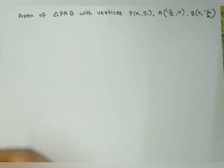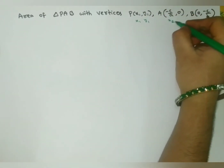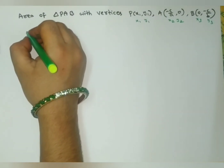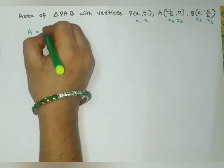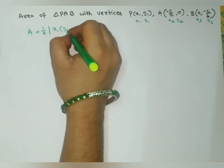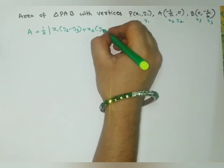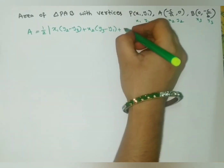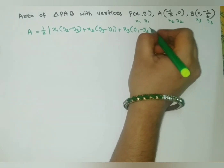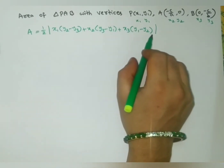By joining P to A and P to B, we get triangle PAB. With P(x1, y1), A(-c/a, 0), and B(0, -c/b), we can calculate the area of triangle PAB using the formula: Area = ½ |x1(y2 - y3) + x2(y3 - y1) + x3(y1 - y2)|.